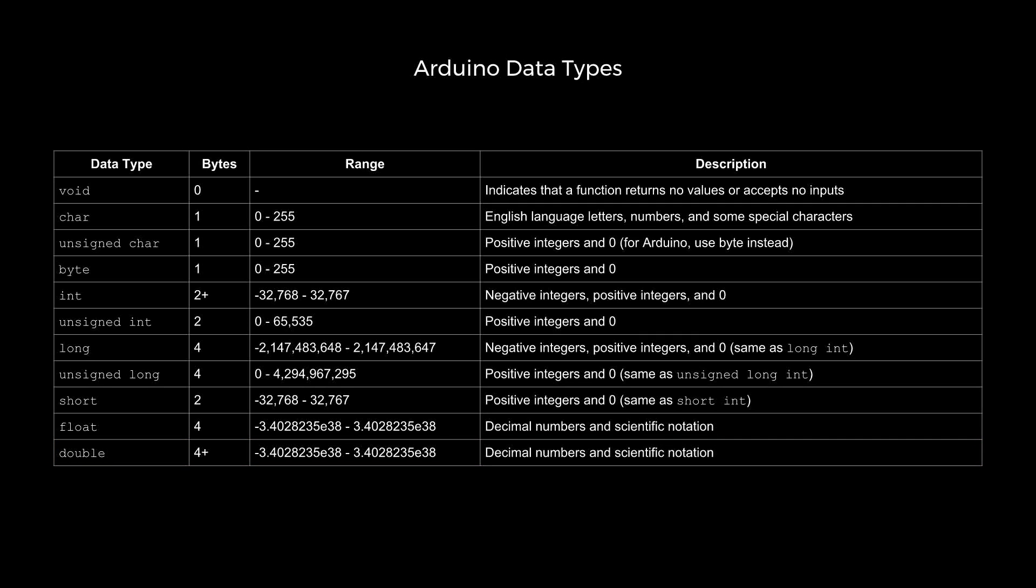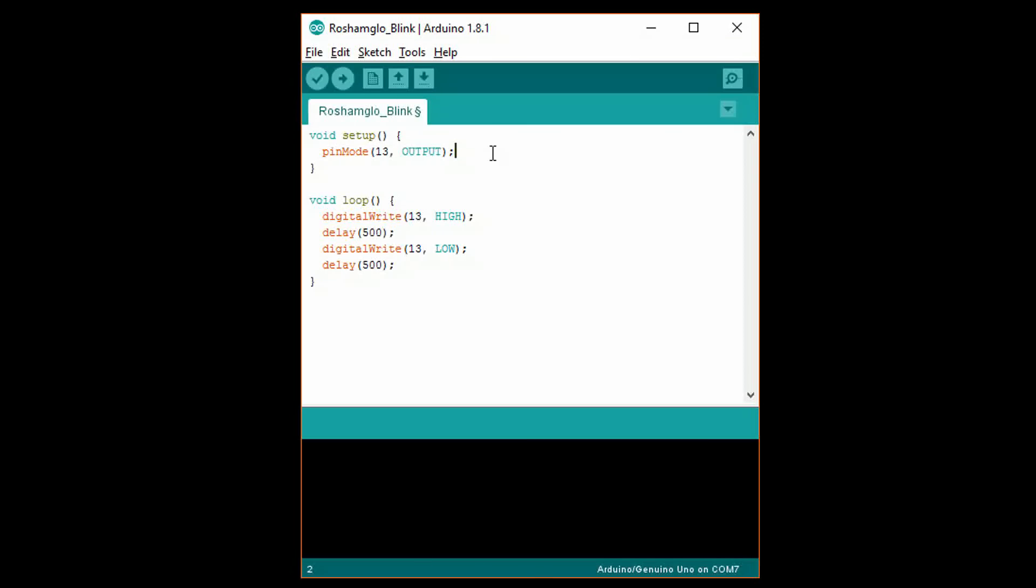There are two ways to use data types. One is as a literal and the other is in variables. Let's look at our blink example again. We can see two literals in effect here, 13 and 500. A literal is a fixed value that does not change throughout the program. We can use other literals as the argument to delay.